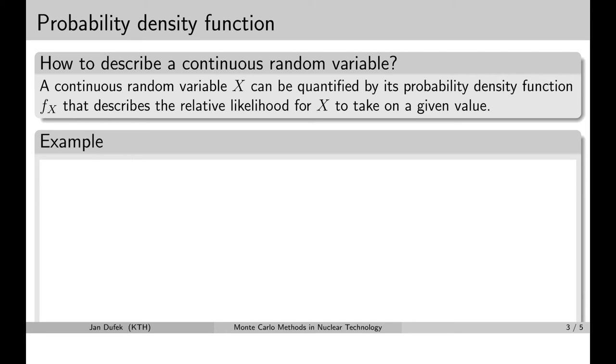Instead we choose to describe continuous random variables by the so-called probability density function that we denote by the letter f. And this function gives us the relative likelihood for the random variable to take on any specific value.